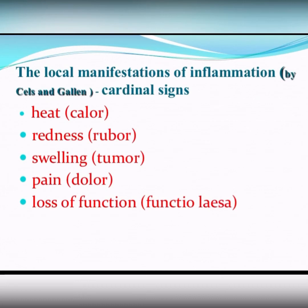Inflammation always manifests itself by local manifestations. Usually these manifestations are called local or cardinal signs of inflammation. There are five cardinal signs: heat (calor), redness (rubor), swelling (tumor), pain (dolor), and loss of function (functio laesa).